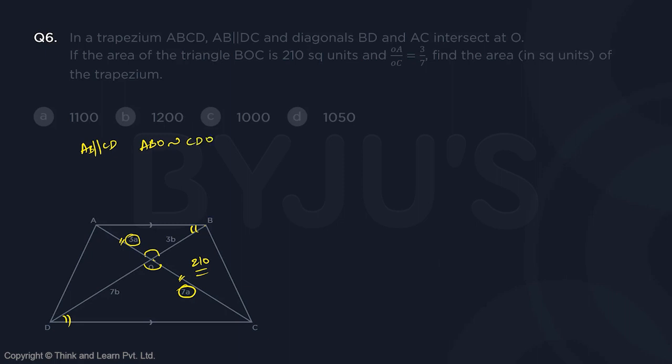If that is the case, then the ratio of the sides should be equal. So OA by OC, if it is 3 by 7, then you will also get OB by OD should also be 3 by 7, because the condition or one of the properties of similar triangles is that the ratio of the sides are equal. So if one ratio is 3 by 7, the other ratio also has to be 3 by 7.